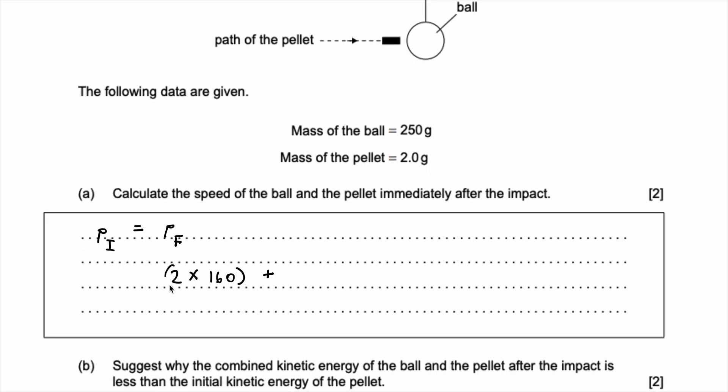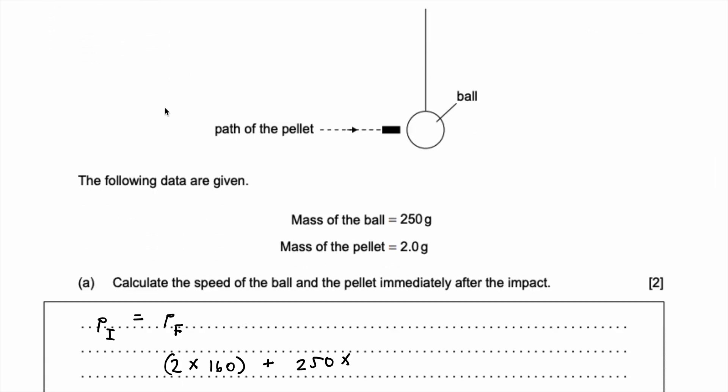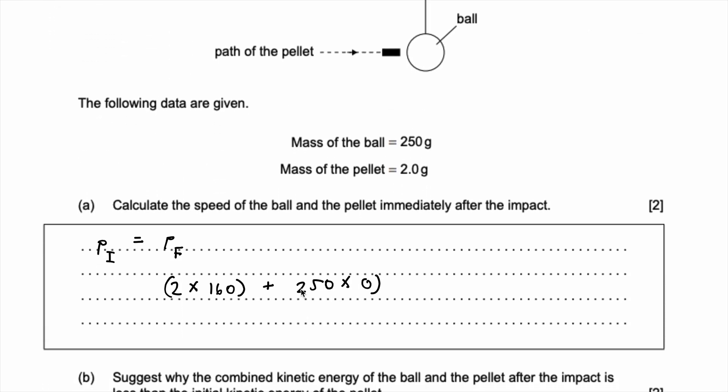Plus now what's the mass of the ball? That's 250 grams and what was its velocity? It's zero because it was stationary.